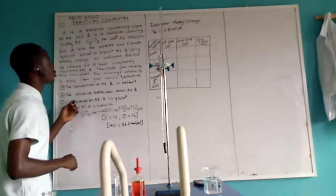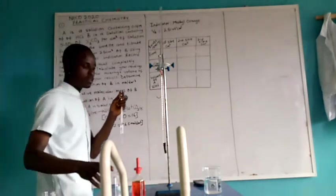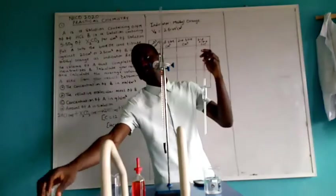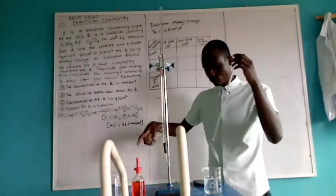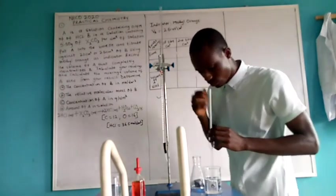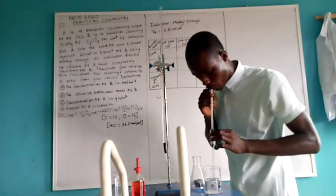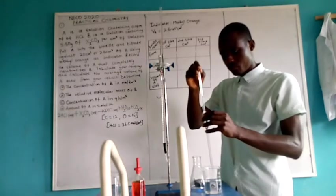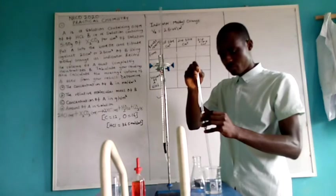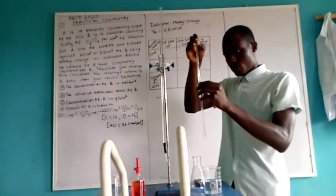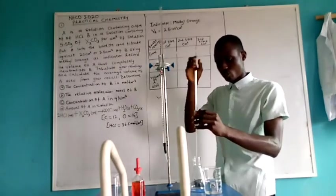The indicator used must also be recorded. They said using methyl orange indicator. So this is our indicator, methyl orange. Now, how do I put the base? I pipette, I soak the base into the titrating flask.